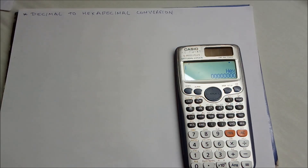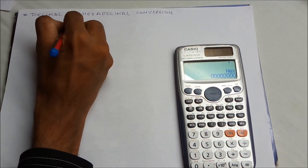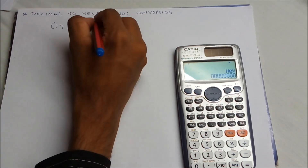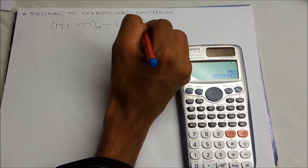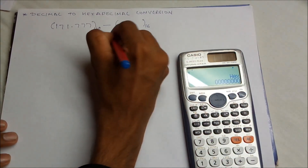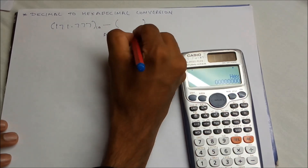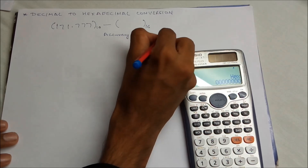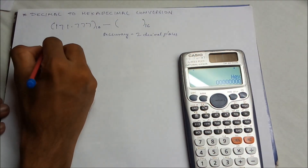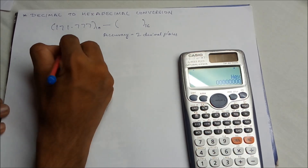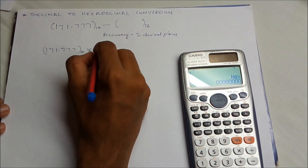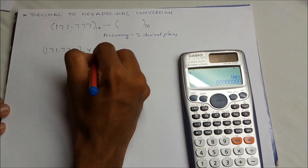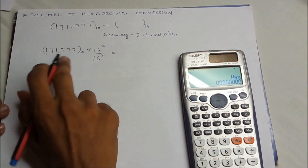Now let's apply the same method to convert a decimal number into hexadecimal. Let's take the example of 171.777 in decimal and convert it into the hexadecimal number system with accuracy up to two decimal places.